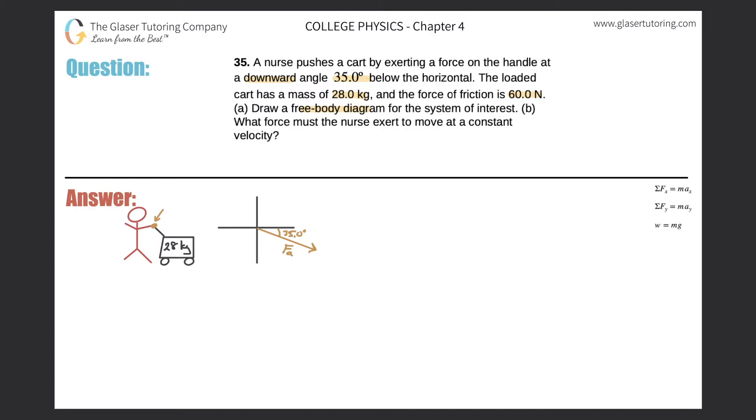Now it says the force of friction is 60 newtons. If she's pushing the cart to the right hand side, that means there must be a frictional force opposing that motion to the left. So in terms of my free body diagram, I'm assuming it's moving to the right and therefore my force of friction will be pointing to the left.